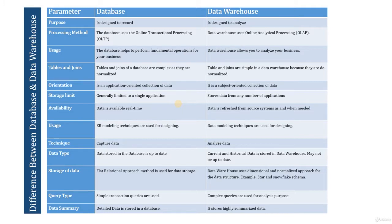The next parameter is processing method. In database, it uses Online Transactional Processing, also called OLTP, which is used for day-to-day transactions. In data warehouse, it uses Online Analytical Processing, also called OLAP. Since historic data is stored in the data warehouse from multiple sources, data is stored for analysis and reporting.